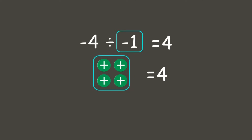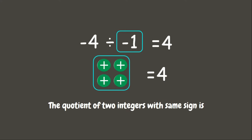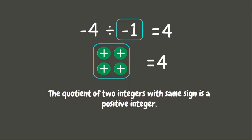As we can notice, when we are dividing two integers with the same sign — whether they are both negative or both positive — the answer is always a positive integer.